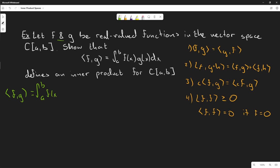For real-valued functions, the functions satisfy the commutative property of multiplication, so this is the same thing as g(x) times f(x) dx, which we can rewrite as the inner product of g,f. So the first axiom is satisfied.